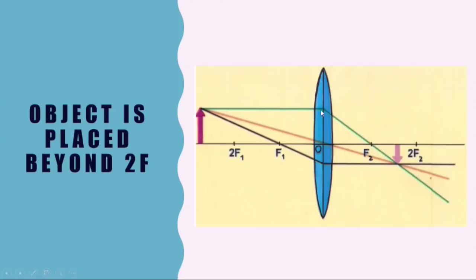The first ray, which is parallel to the principal axis, after passing through the lens passes through the principal focus. The second ray, which passes through the center of the lens, remains undeviated. The third ray, which passes through the principal focus, after passing through the lens becomes parallel to the principal axis. The image formed will be inverted, real, and diminished on the opposite side of the lens. This principle is used in cameras, and our eye also uses the same principle.